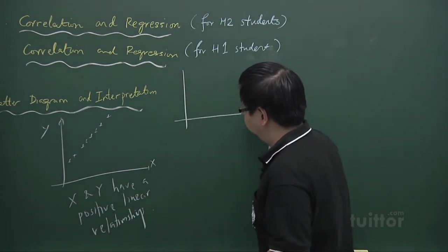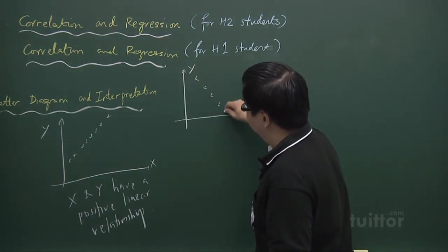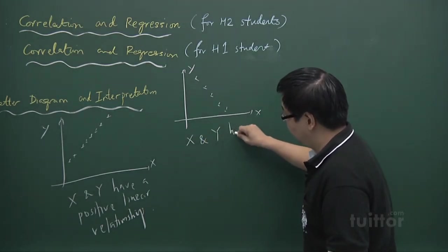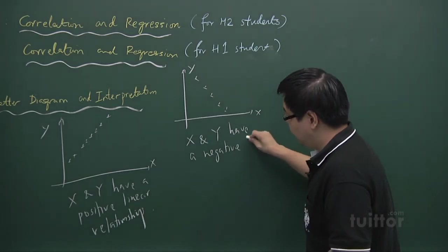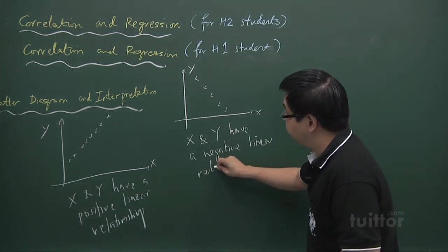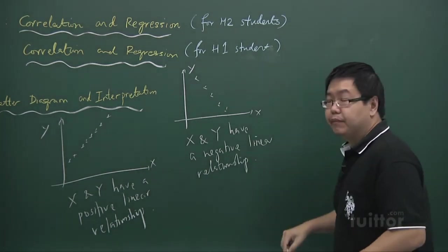Second example, I will say that x and y have a negative linear relationship.